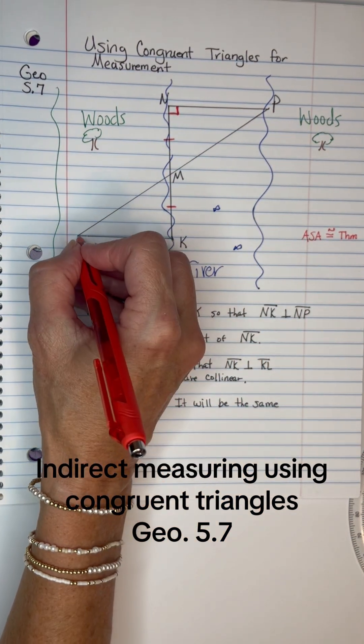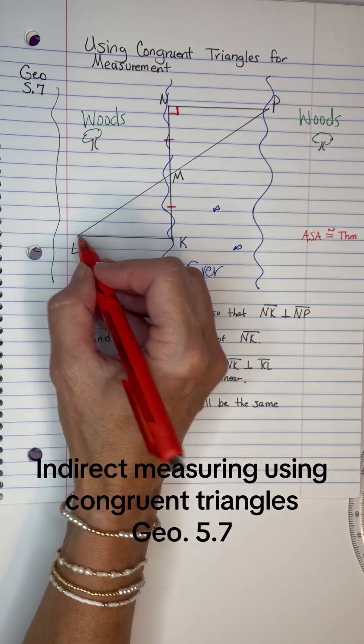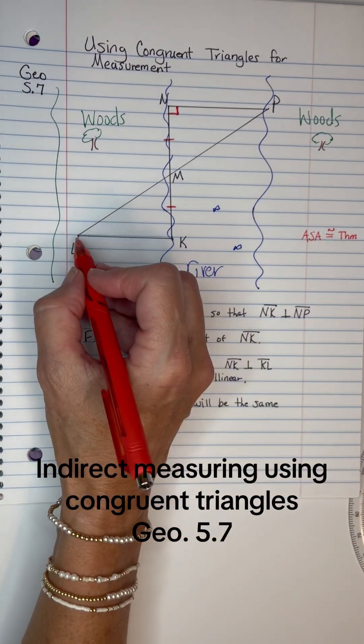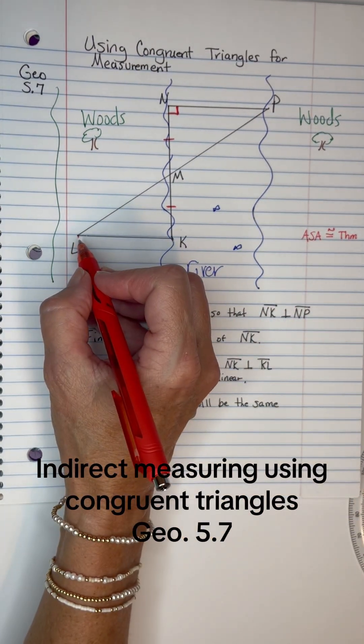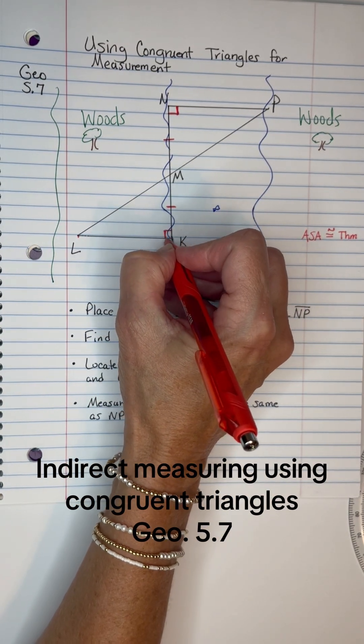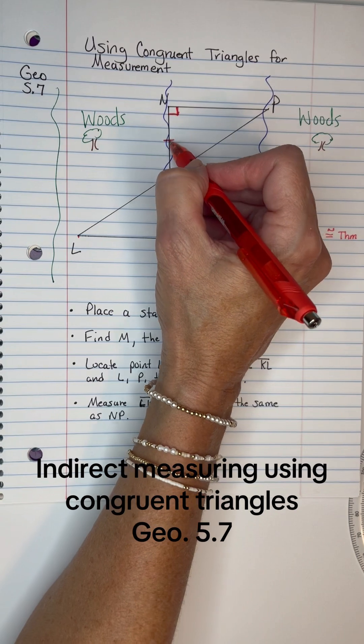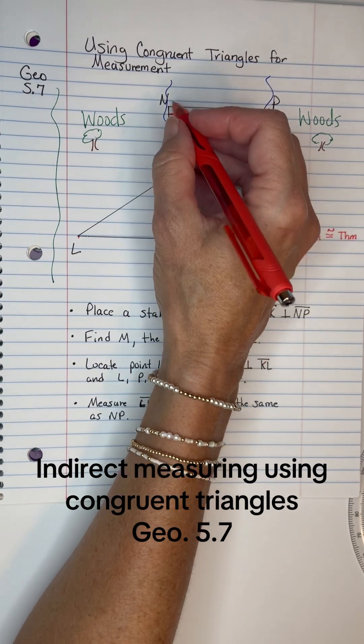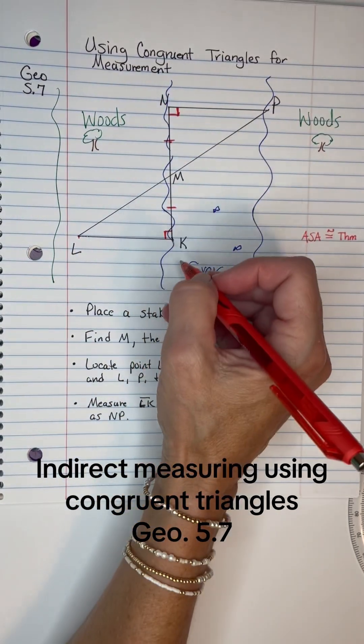If I want it to be perpendicular, I've got an angle and a side. Notice that I've got two lines formed here, which means the vertical angles are going to be congruent.